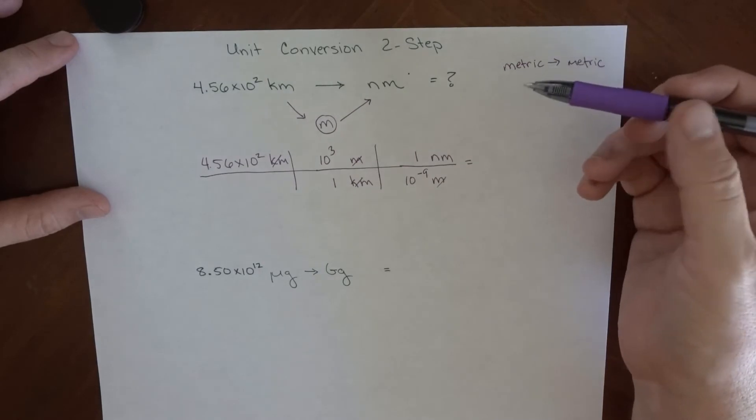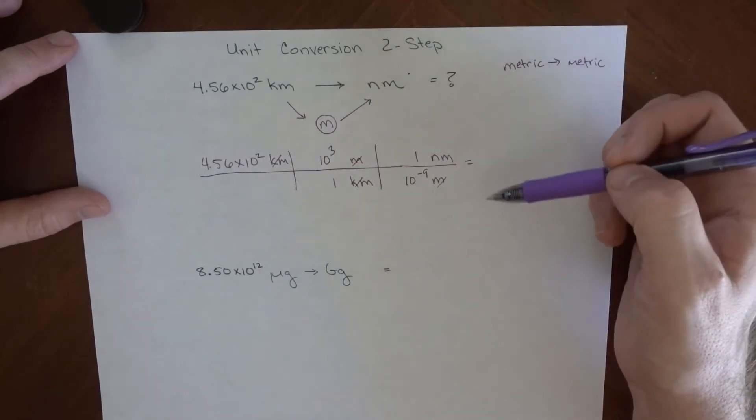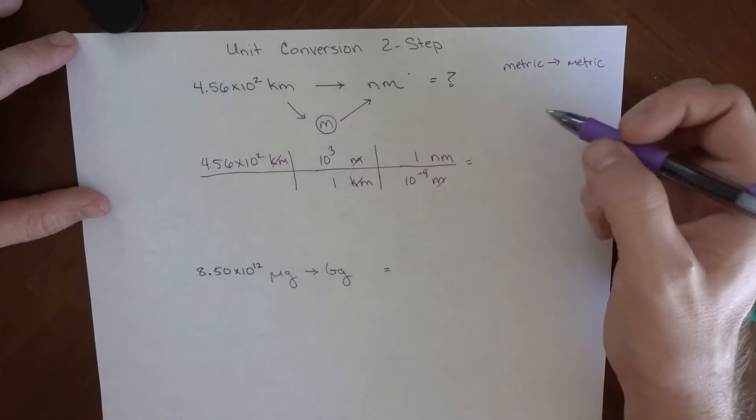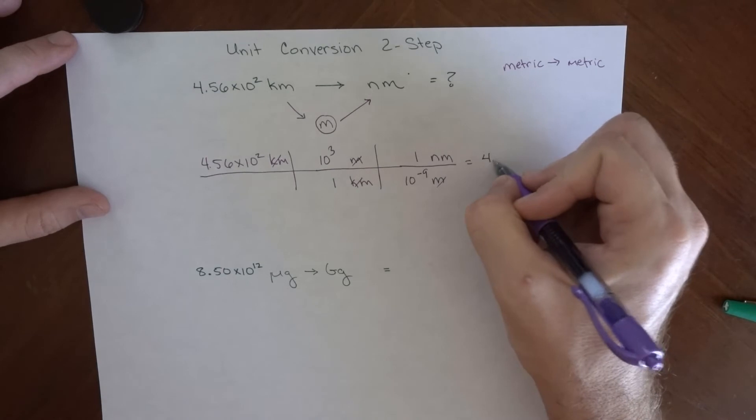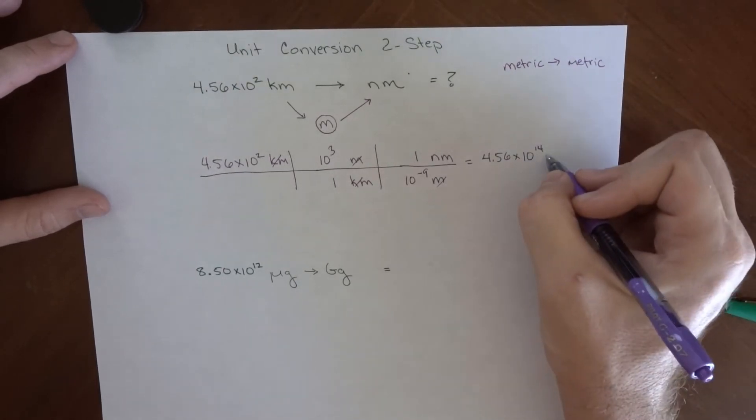So all I have to do here is go through and do the multiplication. I can put this in my calculator, or I can do just math with powers of 10, and go through and do that. So this should come out to 4.56 times 10 to the 14th nanometers.